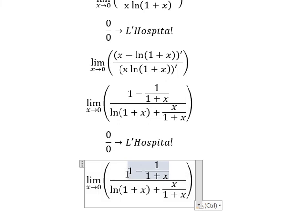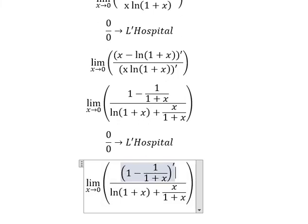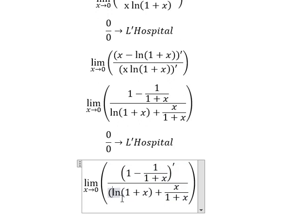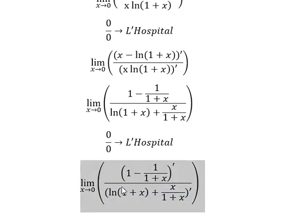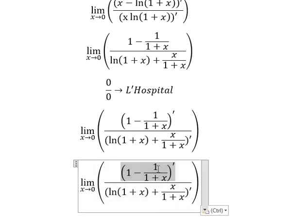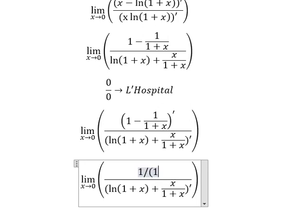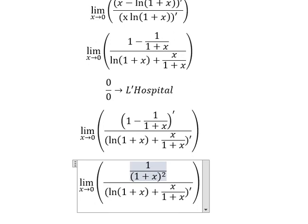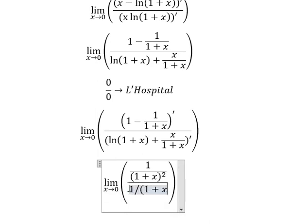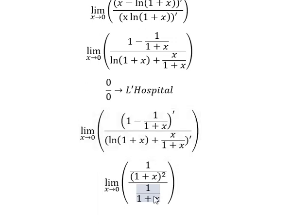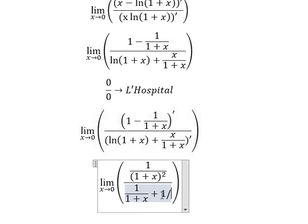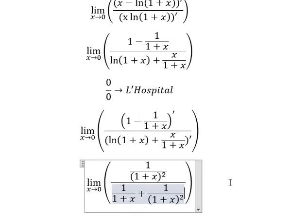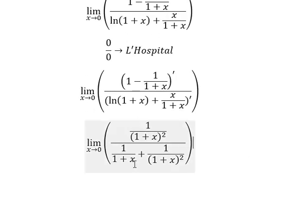So we take the first derivative of the numerator and denominator again. This one gives 1 over (1+S) squared; this one gives 1 over (1+S); and this one gives 1 over (1+S) squared. Now we can substitute zero here, here, and here.